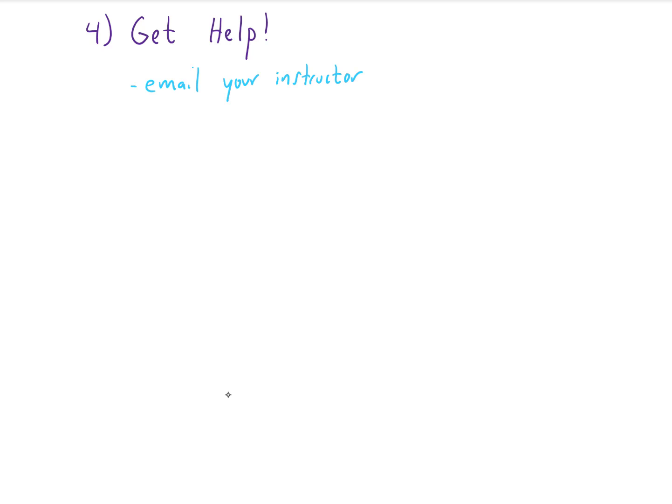The first thing that you should do is email your instructor, and make sure that your email just doesn't say something like 'I don't know how to do number five.' Try to give your instructor a little bit more information about what you're struggling with. Make sure to include the section and problem number in that email. Explain what you've tried or explain why you're confused about the problem, and make sure to proofread your email.